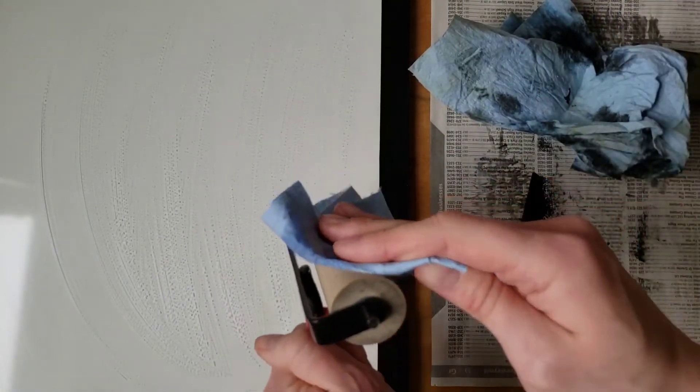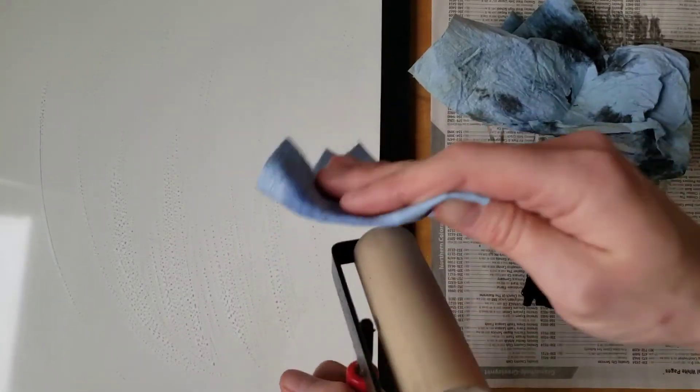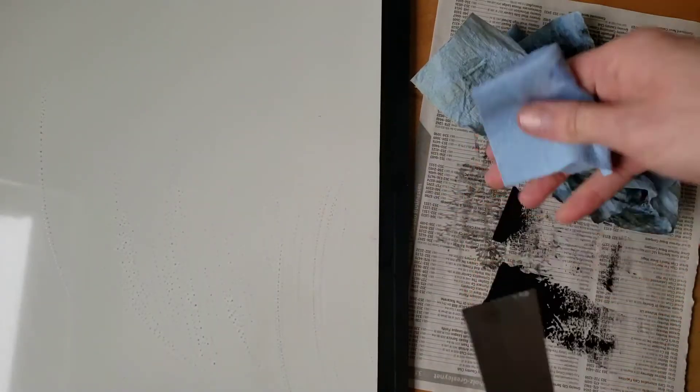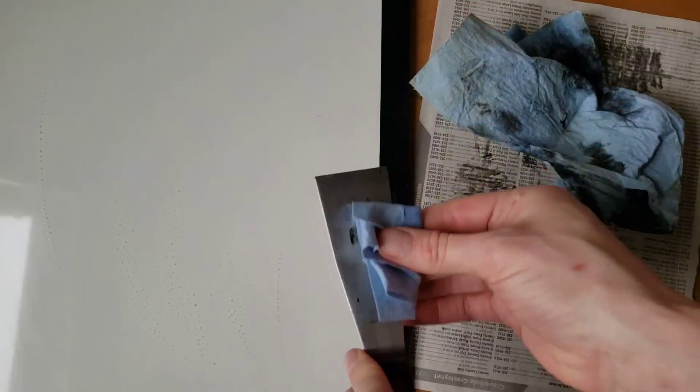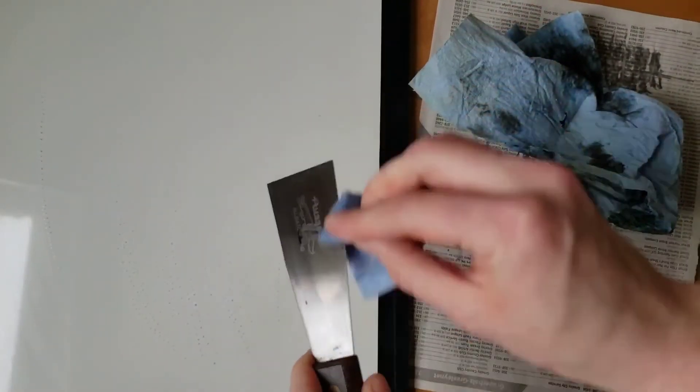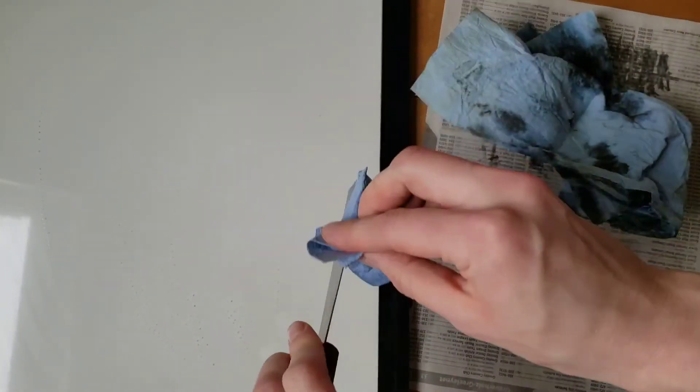Use a paper towel with watered down dish soap to remove the residue left by the oil. Remember to get all five sides of the ink knife. Then dry with a clean paper towel.